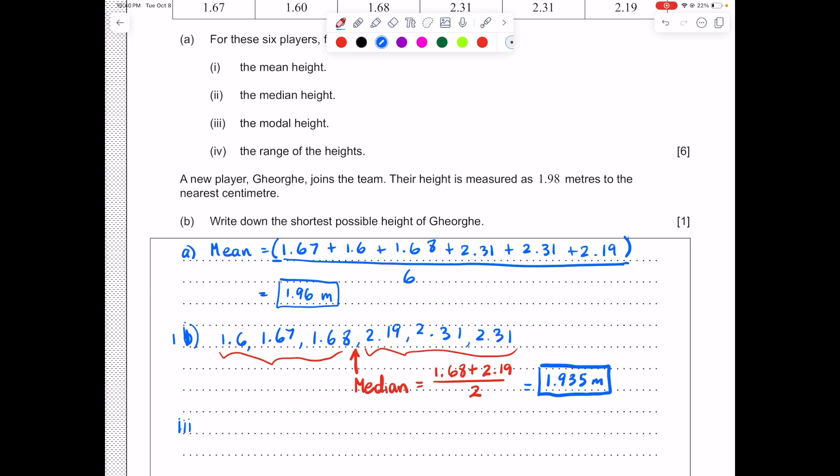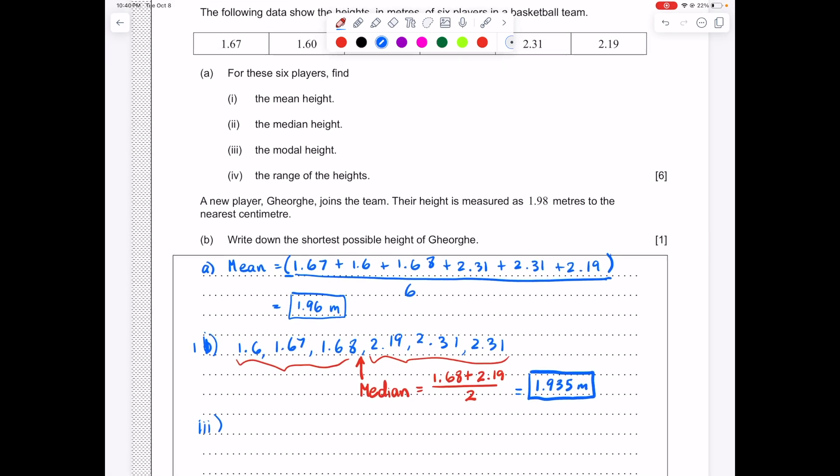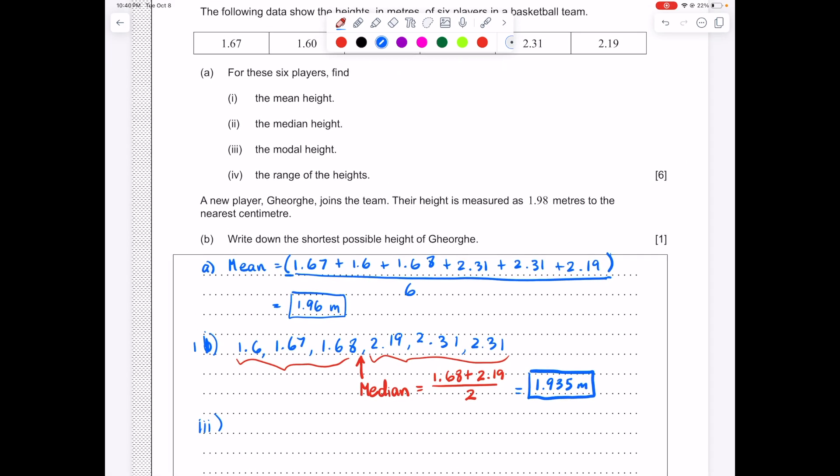So the modal height just means the mode. You may recall that mode is the number that appears most frequently in the list of numbers. We can see that 2.31 is in our data set twice. So that is our mode. We can just write that down. No calculations needed, no work to be shown.